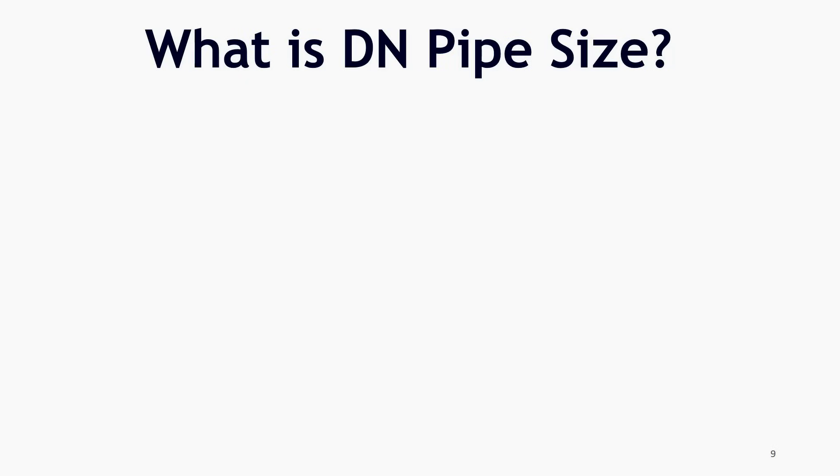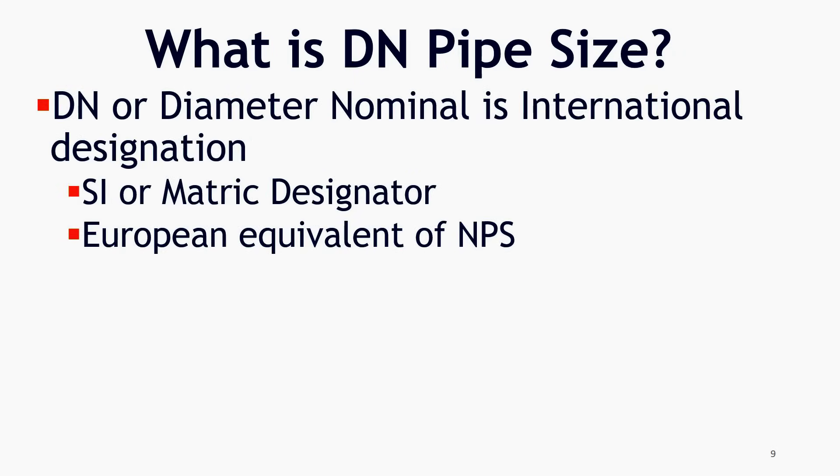So, what is DN? DN or Diameter Nominal is an international designation or you can say it is SI or metric designator, and also a European equivalent of NPS to show pipe size. Here, you have to note that DN shows pipe size differently than NPS.